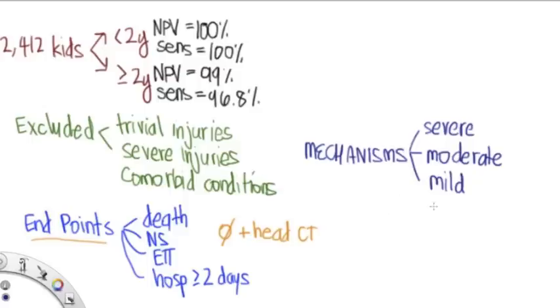Now the mild injuries, those are the ones of the ground level falls for a kid that just runs into something. And anything else was considered moderate. And those are the ones we looked at. Remember that severe was excluded, and so is mild.